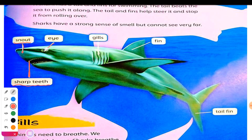Then we have here the eye of the shark. How many eyes do you think animals have? Two. On this shark, how many eyes does it have? Two. Yes, two.